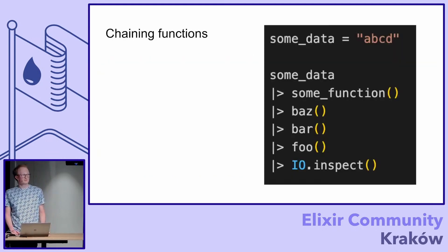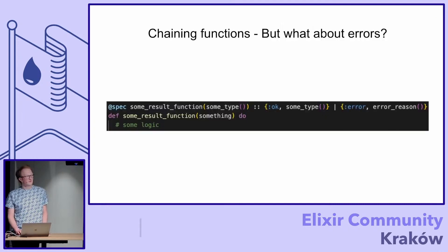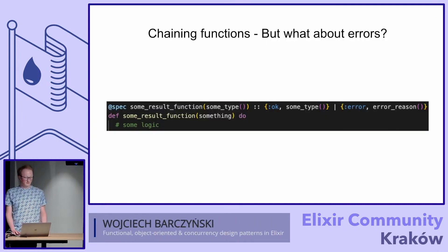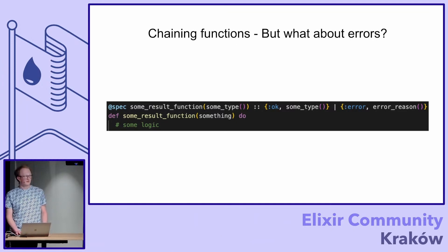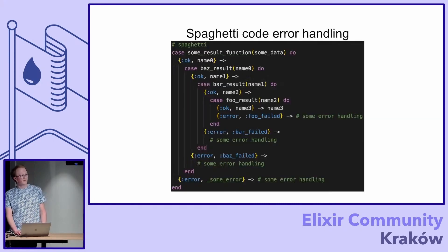Chaining functions is quite common — you've probably seen something like this a lot when programming in Elixir. But there comes a twist when we want to return something that isn't simply a value but something like a result. Returning an OK or error tuple from a function is something anyone programming Elixir encounters at some point, and you can just pipe them into other functions. The first thing that comes to mind is spaghetti code error handling.